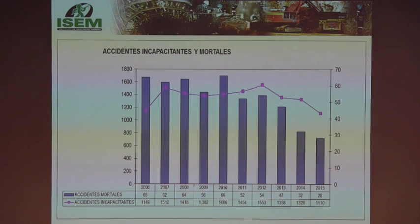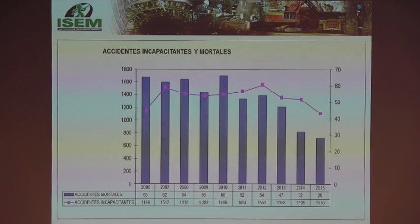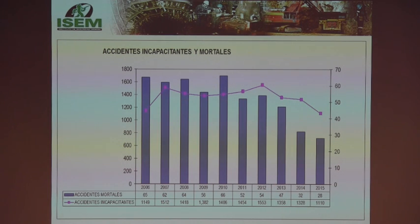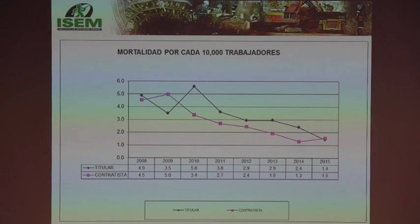We must also consider that beyond fatal accidents, there are incapacitating accidents — and every year in mining we have more than 1,000. The red line shows registered incapacitating accidents. Since 2012 there has been a decline, but before that we were practically on a plateau of between 1,400 and 1,500 incapacitating accidents per year. The big question is whether many of these could have been fatal — and surely many of them could have been.